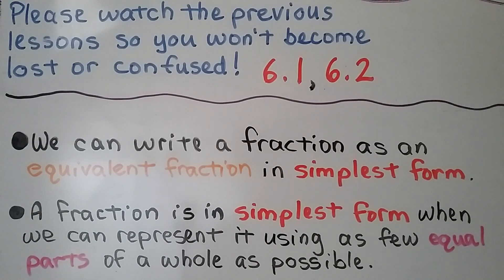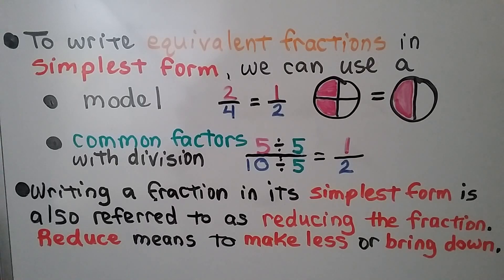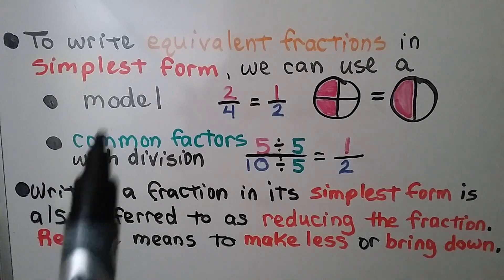We can write a fraction as an equivalent fraction in simplest form. A fraction is in simplest form when we can represent it using as few equal parts of a whole as possible. To write equivalent fractions in simplest form, we can use a model.